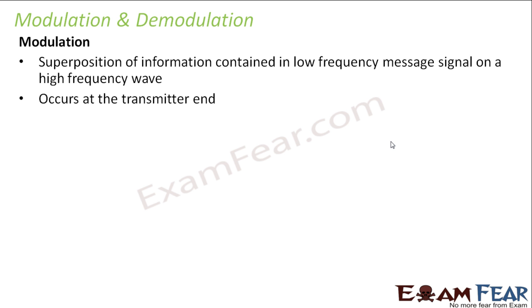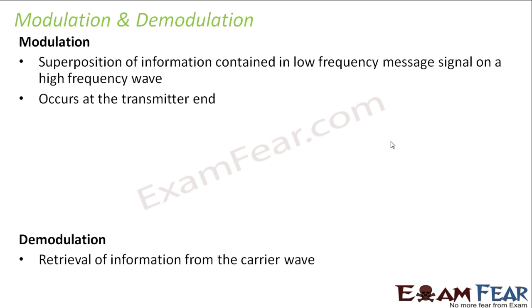Modulation occurs at the transmitter end — just like you put the letter onto the train at the departure side. Demodulation is the opposite process: it is retrieval of information from the carrier wave. The receiver must take the letter out of the train; if the letter remains inside the train, the receiver will never receive it. That retrieval process is known as demodulation, and it occurs at the receiver end.